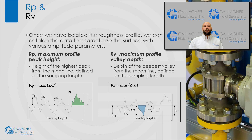To start, we have RP and RV. RP is known as the maximum profile peak height, which is defined on the sampling length and is the height of the highest peak from the mean line. RV is known as the maximum profile valley depth, which is defined on the sampling length and is the depth of the deepest valley from the mean line.